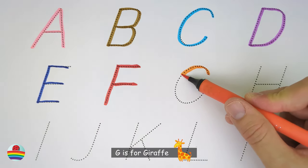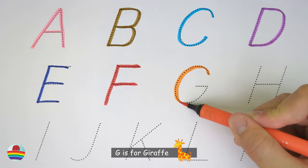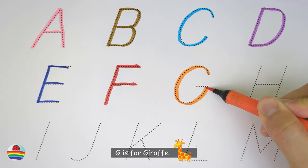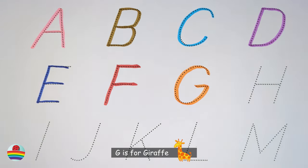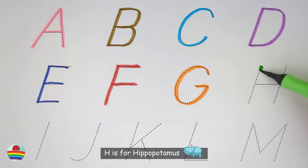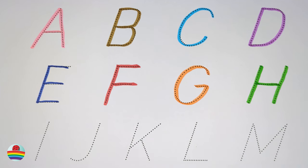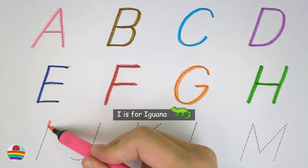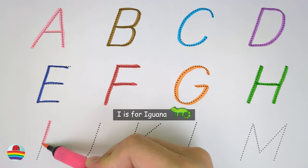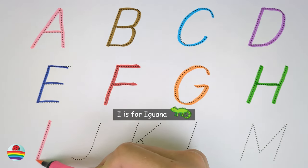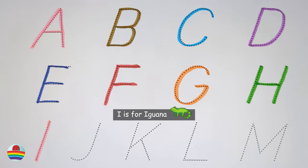G. G is for giraffe. G. H. H is for hippopotamus. H. I. I is for iguana. I.